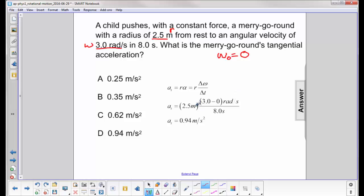We plug in our values. Here's the radius. Here's the final angular velocity. Here's the initial. Divide it by the time. And we get a tangential acceleration of 0.94 meters per second squared.